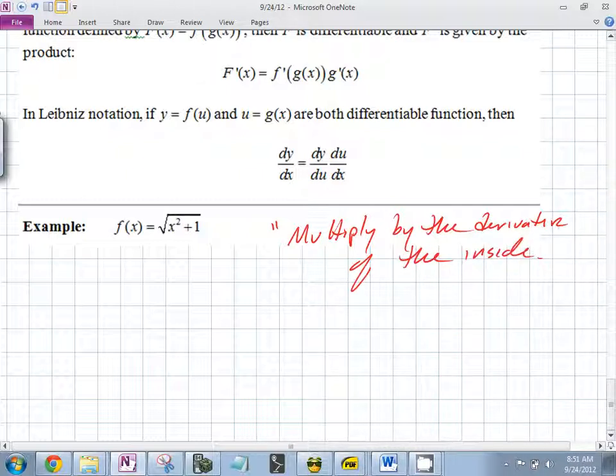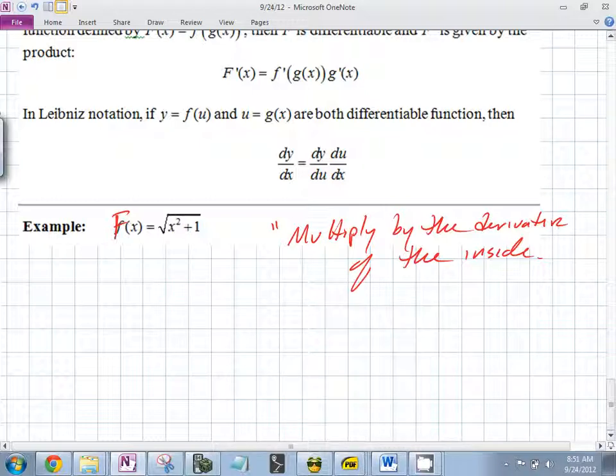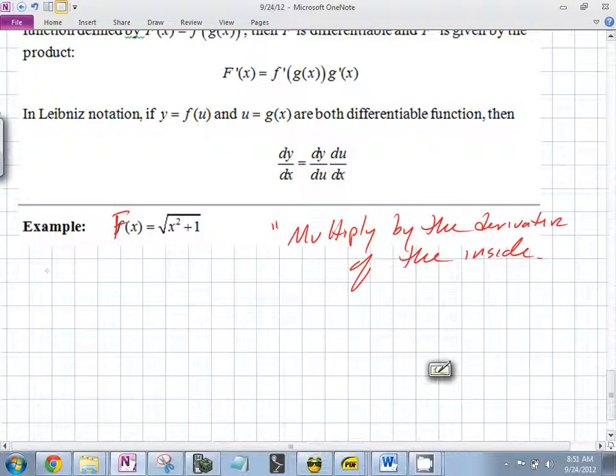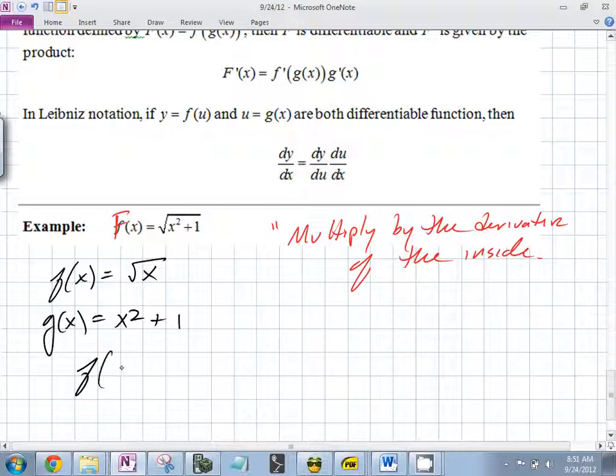We need to do something. Here is the chain rule. What this translates to is if f and g are both differentiable, and F is the composite function defined by f composed of g, what does that mean? You're putting g into f. Then the derivative is the derivative of the outside evaluated at the inside times the derivative of the inside. This is also the notation in Leibniz notation. What it boils down to is one phrase: multiply by the derivative of the inside.